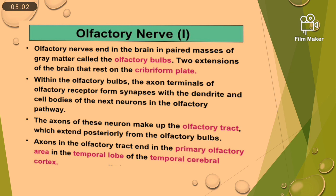The axons of these neurons make up the olfactory tract, which extends posteriorly from the olfactory bulbs. The axons in the olfactory tract end in the primary olfactory area in the temporal lobe of the cerebral cortex.